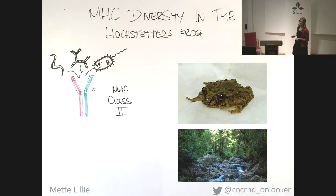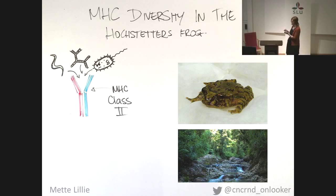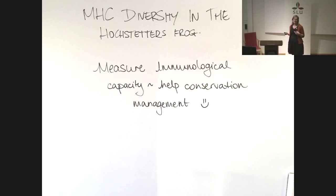So we were looking at these because they are of conservation concern. We were using the MHC class 2, which is a particular MHC gene that provides resistance to bacteria, fungi, and parasites. These are the common diseases present in our frogs. We used MHC to give us an idea of the immunological capacity of our populations, and this is all hoping to feed back into conservation of these species.